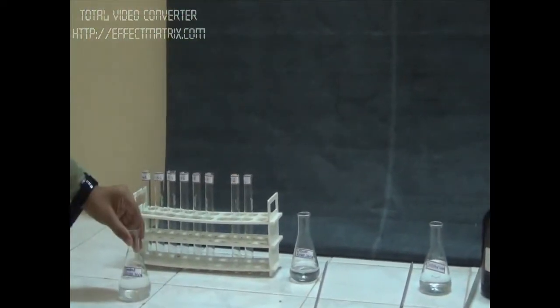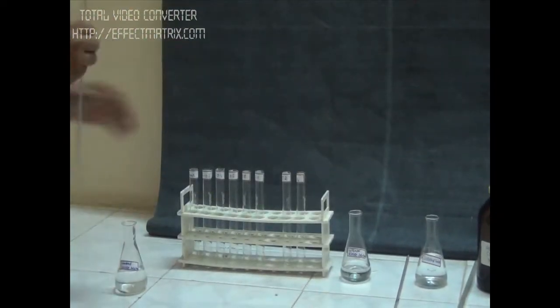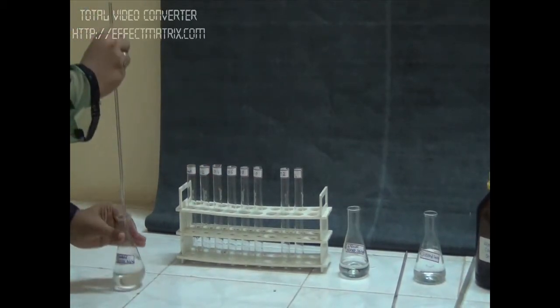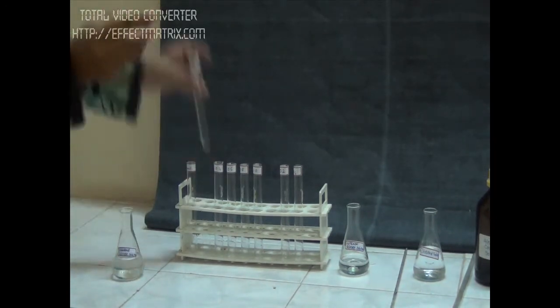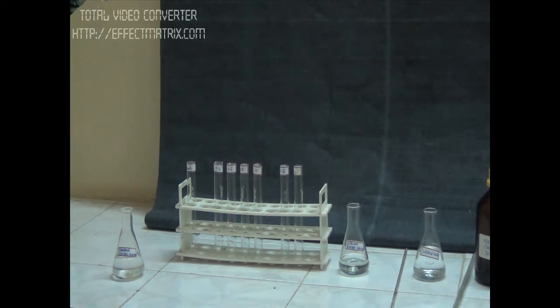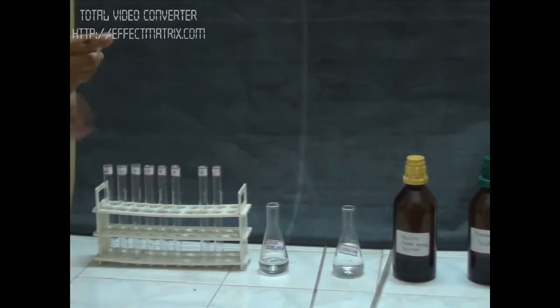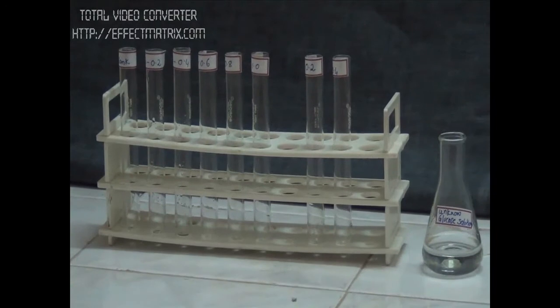First of all, we are going to take our standards. We have taken aliquots as 0.2, 0.4, 0.6. So I take my first aliquot of 0.2. I will use standard reducing sugar. Next is 0.4. Then we have to add 0.6 and 0.8.